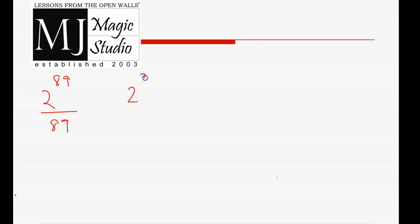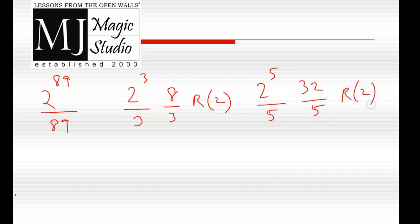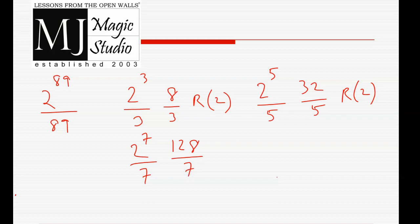When you divide 2 to the power 3 by 3, what is the remainder? 2 to the power 3 is 8. If we divide 8 by 3, remainder is 2. Let's take one more example. 2 to the power 5 divided by 5: 2 to the power 5 is 32, and 32 divided by 5 gives remainder 2. 2 to the power 7 divided by 7: 2 to the power 7 is 128, and 128 divided by 7 gives remainder 2.